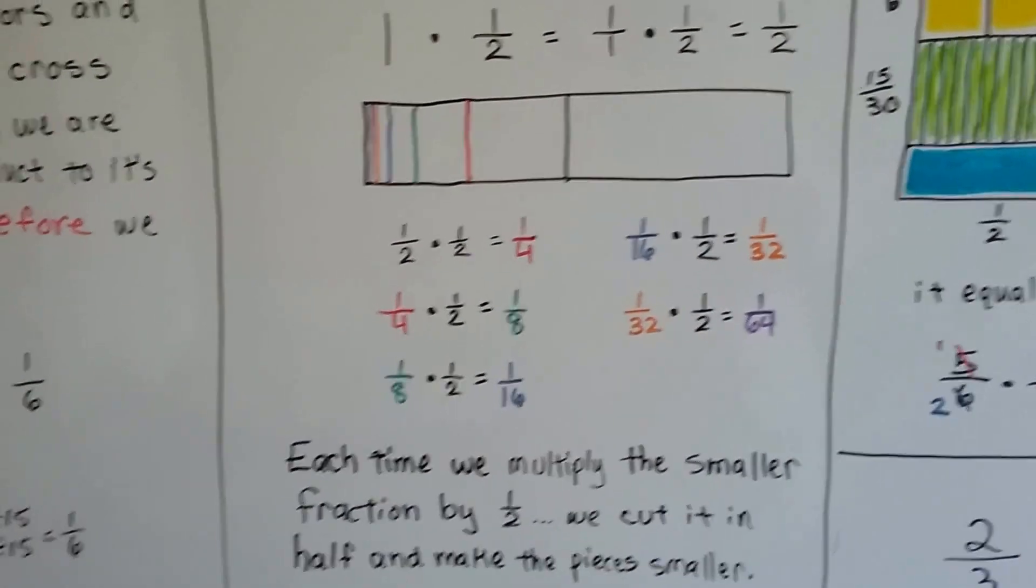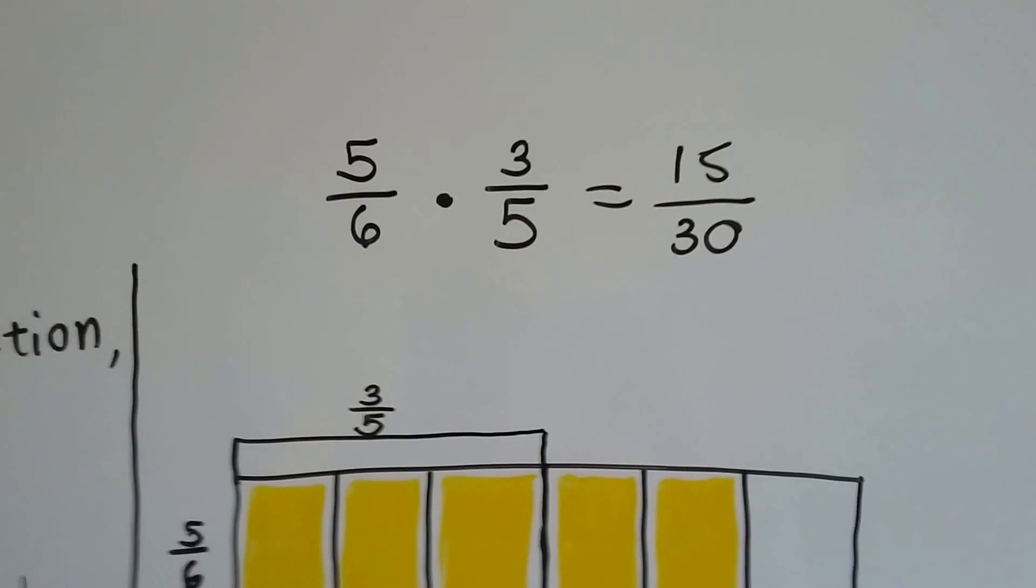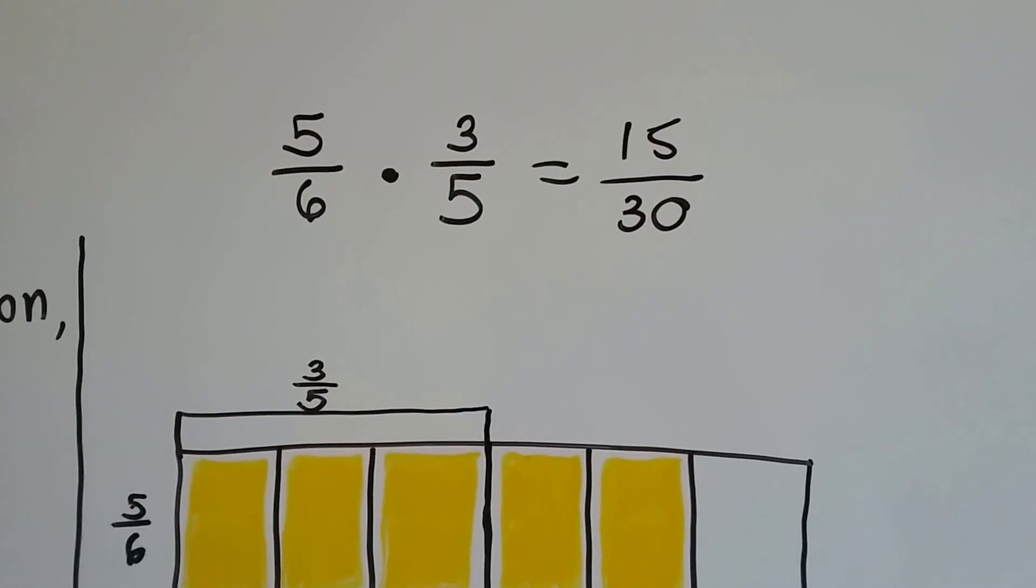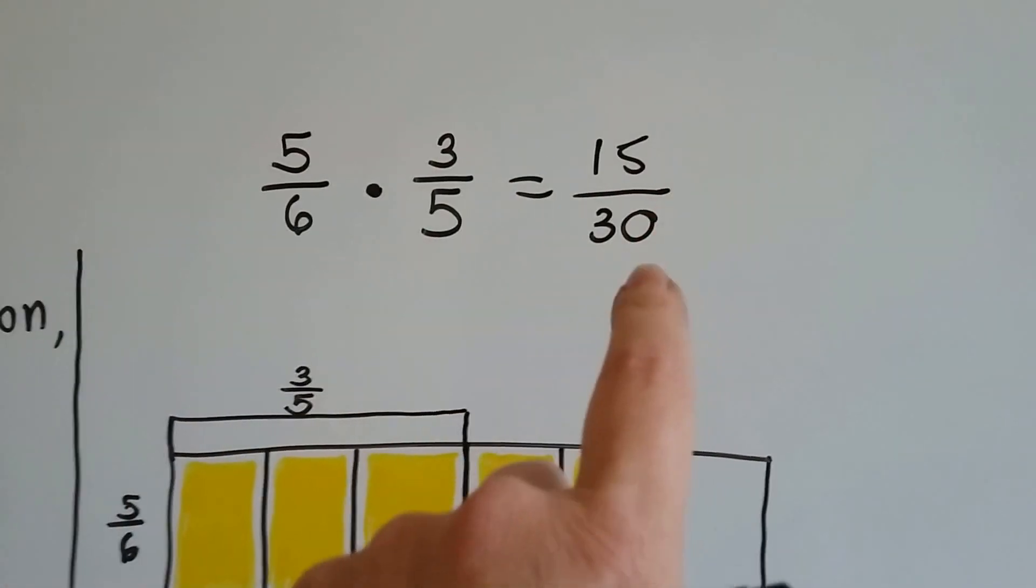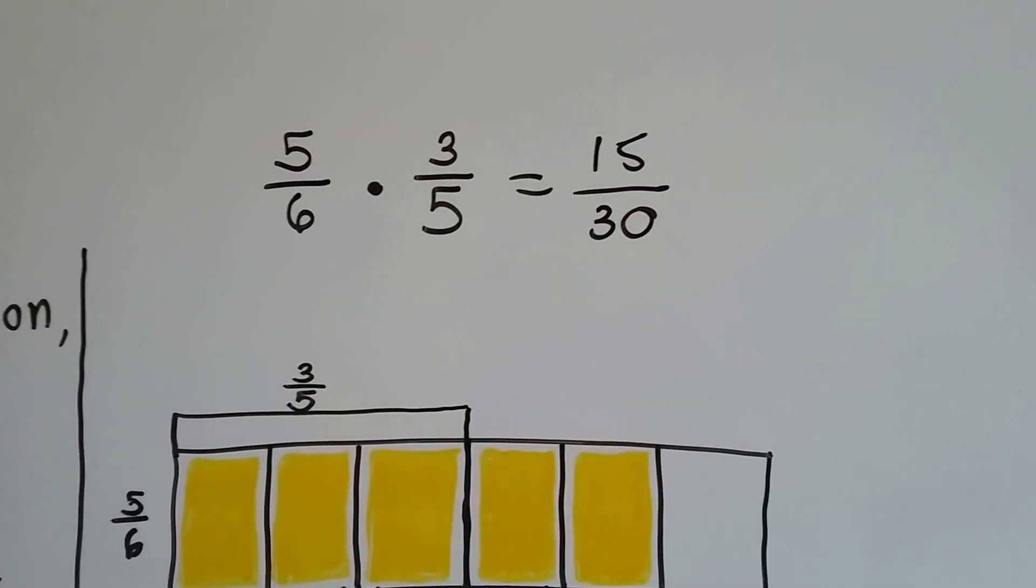I'm going to show you what happens when we have 5/6 times 3/5. I did it the old way and multiplied straight across and got 15/30, and that needs to be reduced to its lowest terms.